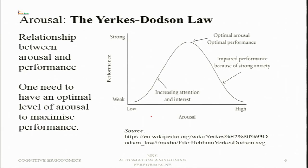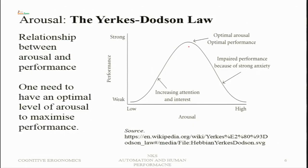To understand arousal, there is the Yerkes-Dodson law, which provides a relationship between performance and arousal. The relationship is an inverted-U kind of relationship, and an optimal level of arousal can be found where performance is maximum. When the level of arousal is low — for example, when we first wake up — our arousal level is low and our sensory system does not operate at its best level. Performance is weak, and there is poor attention and low situation awareness immediately after waking.